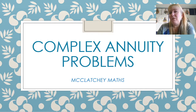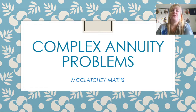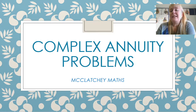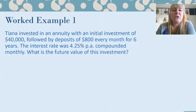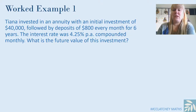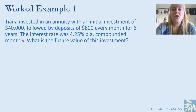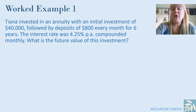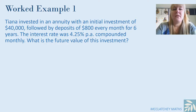But there's been some different hybrids or combinations of different types of problems together and some people have become very confused about it, so we're going to look at some more difficult examples today. In this first example we've got an annuity with an initial investment of $40,000 followed by deposits of $800 every month for six years. We need to find the future value of the investment.